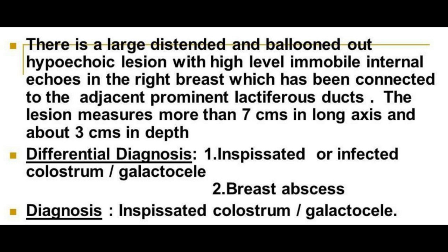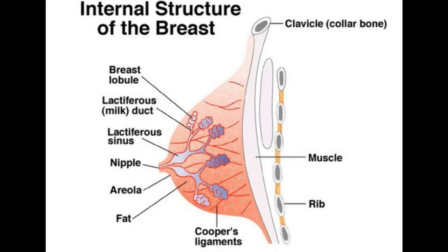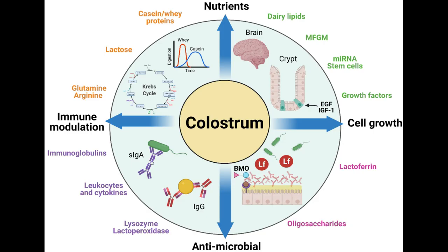The final diagnosis was galactocele, confirmed after aspiration analysis and then drained by incision. Please go through the internal structure of the breast. After reviewing this, you can remember that any lesion in the outer third of the breast parenchyma almost rules out galactocele.